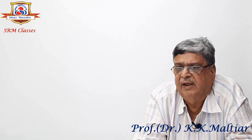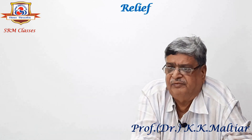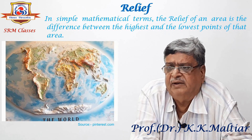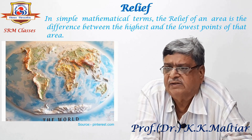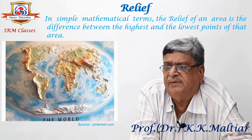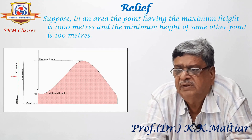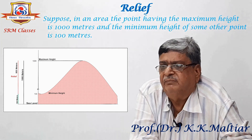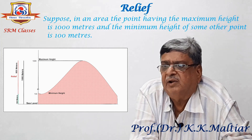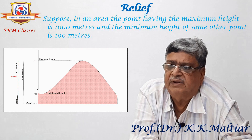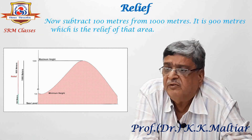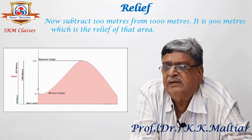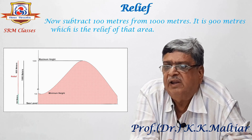Now I come to the next point, that is relief. In simple mathematical terms, the relief of an area is the difference between the highest and the lowest points of that area. Suppose in an area the point having the maximum height is 1000 meters and the minimum height of some other point is 100 meters. Now subtract 100 meters from 1000 meters — it is 900 meters, which is the relief of that area.